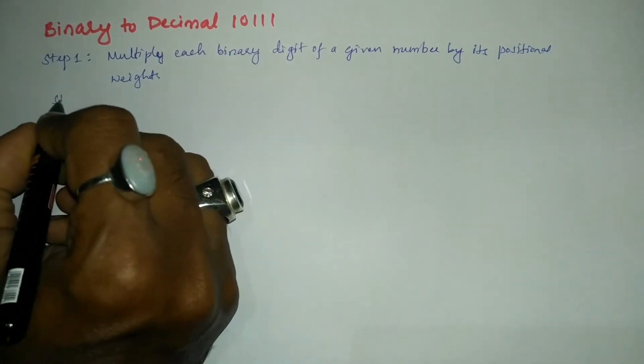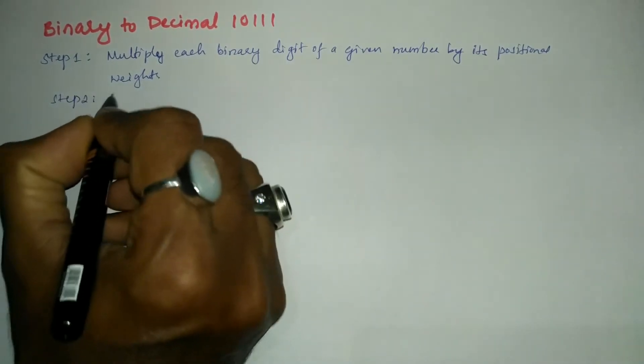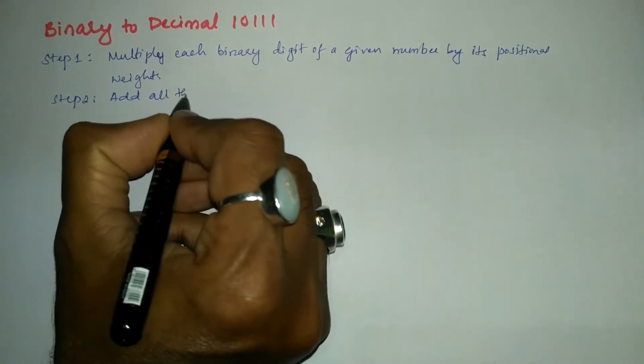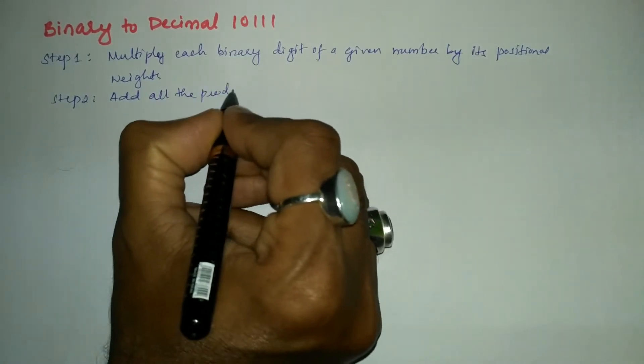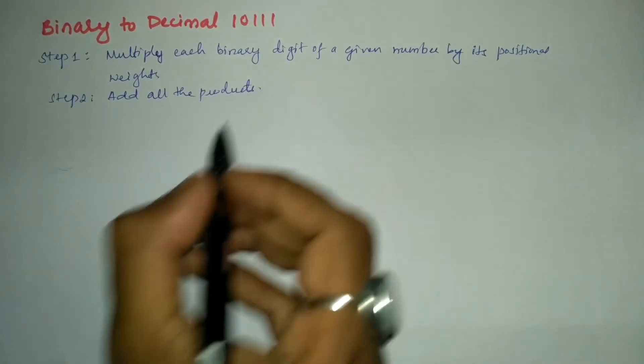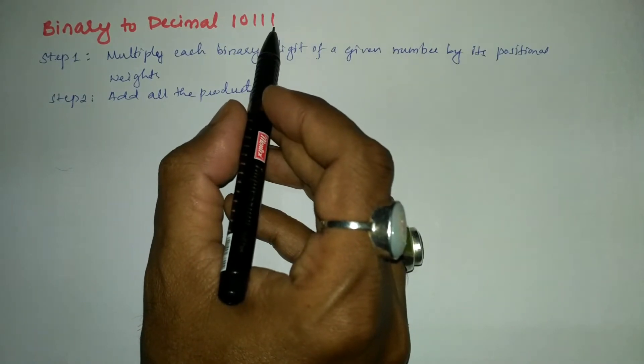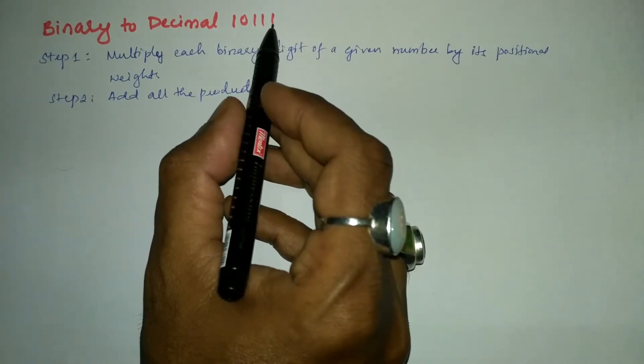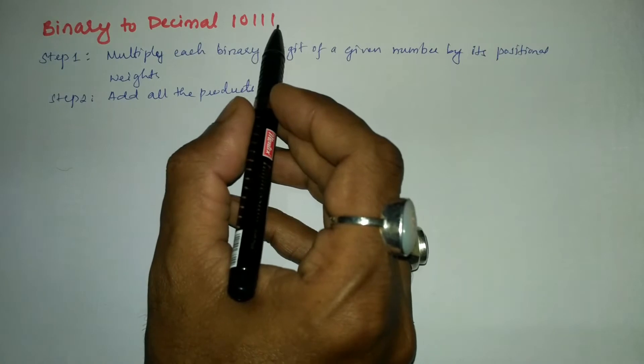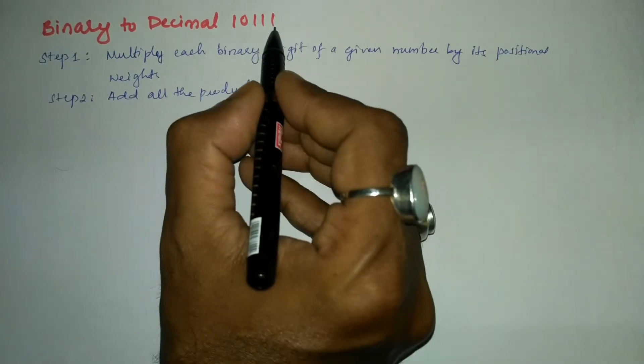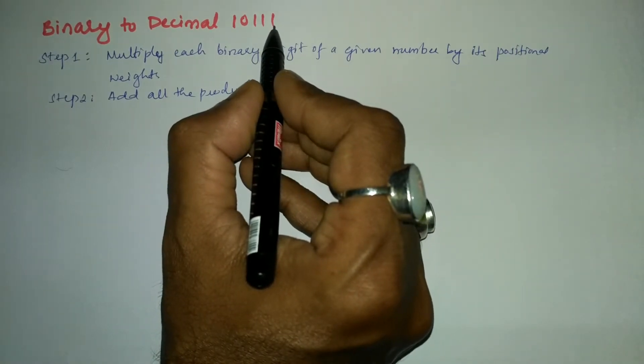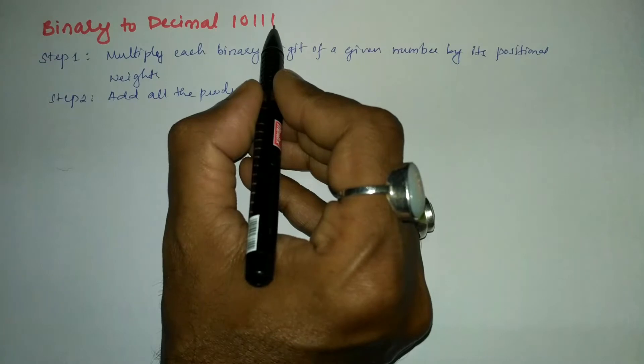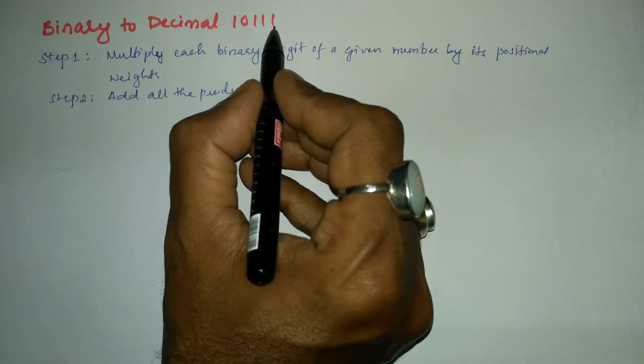Step two: add all the products. Now let us multiply each and every bit of this given binary number by its positional weight. So let us count from the right hand side. The positional weight of this particular bit is zero, one, two, three, four.